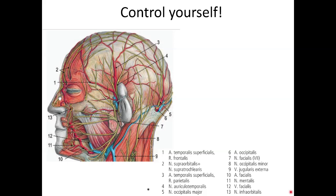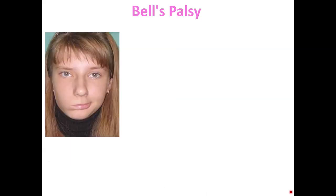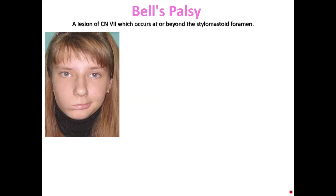A very important question concerns paralysis — so-named Bell's Palsy. Bell's Palsy is a lesion of the seventh cranial nerve which occurs beyond the stylomastoid foramen. What can we find in this situation?